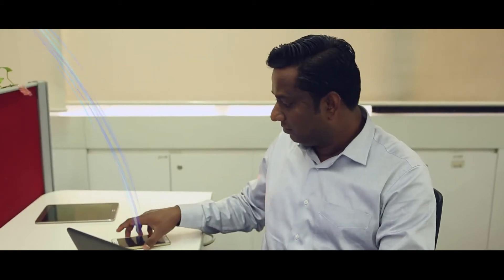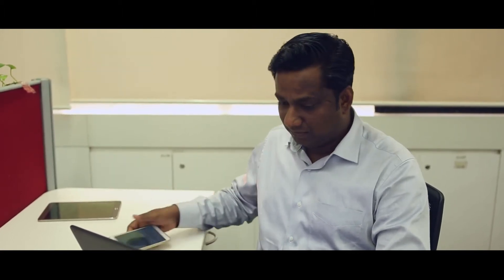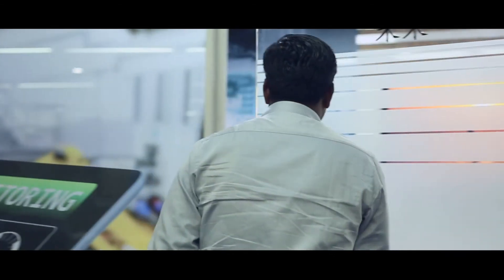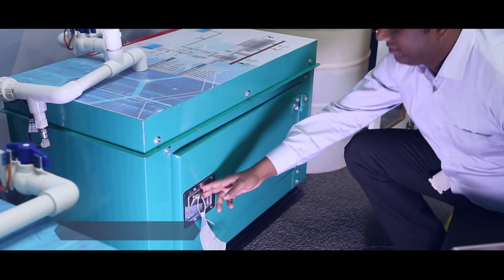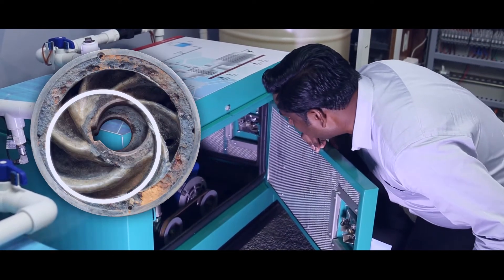Jim refers to the maintenance app to identify potential reasons for lower flow. On physical inspection, Jim identifies a damaged impeller which needs to be replaced.